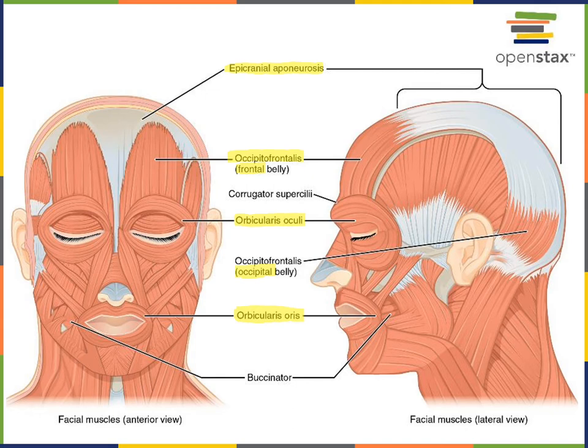Orbicularis oris is another circular muscle with a circular fascicle arrangement. It surrounds the entrance to the oral cavity, and the action of orbicularis oris is to close the lips in order to protect the entrance to the oral cavity.